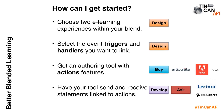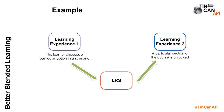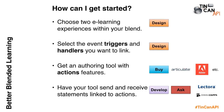A trigger is something the learner does that causes something to happen — for example, the learner chooses a particular option in a scenario. The handler is the thing that happens as a result: a particular section of a course is unlocked. Choose your two learning experiences, identify the triggers and handlers, and I'd recommend starting with just a small number of links initially, then build on that.